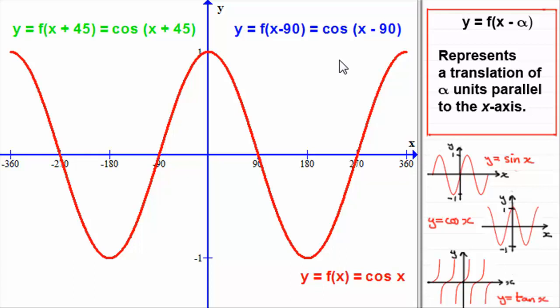Let's see how you got on. With this first one, y equals f of x plus 45, the alpha is negative 45. That means we translate the graph 45 degrees parallel to the x-axis. It's going to shift the graph to the left by 45 degrees.